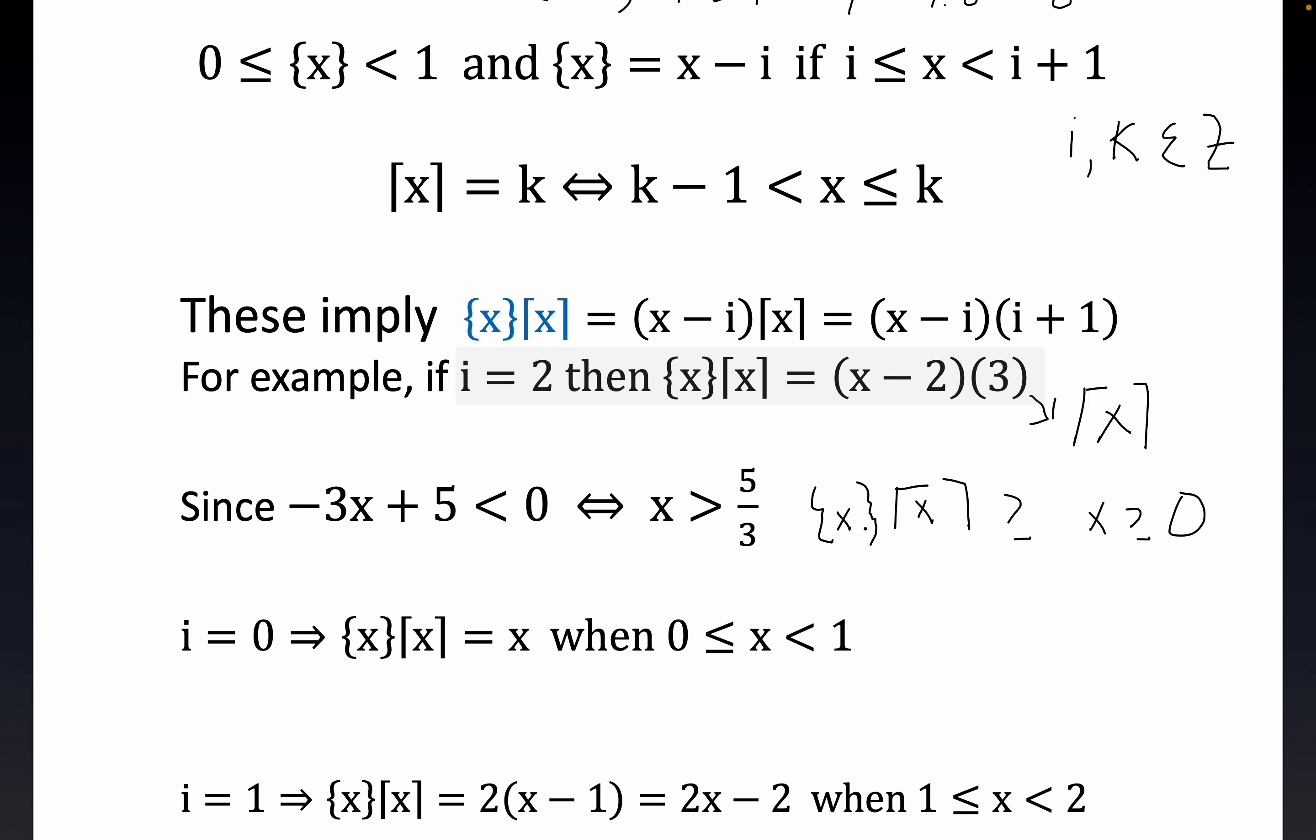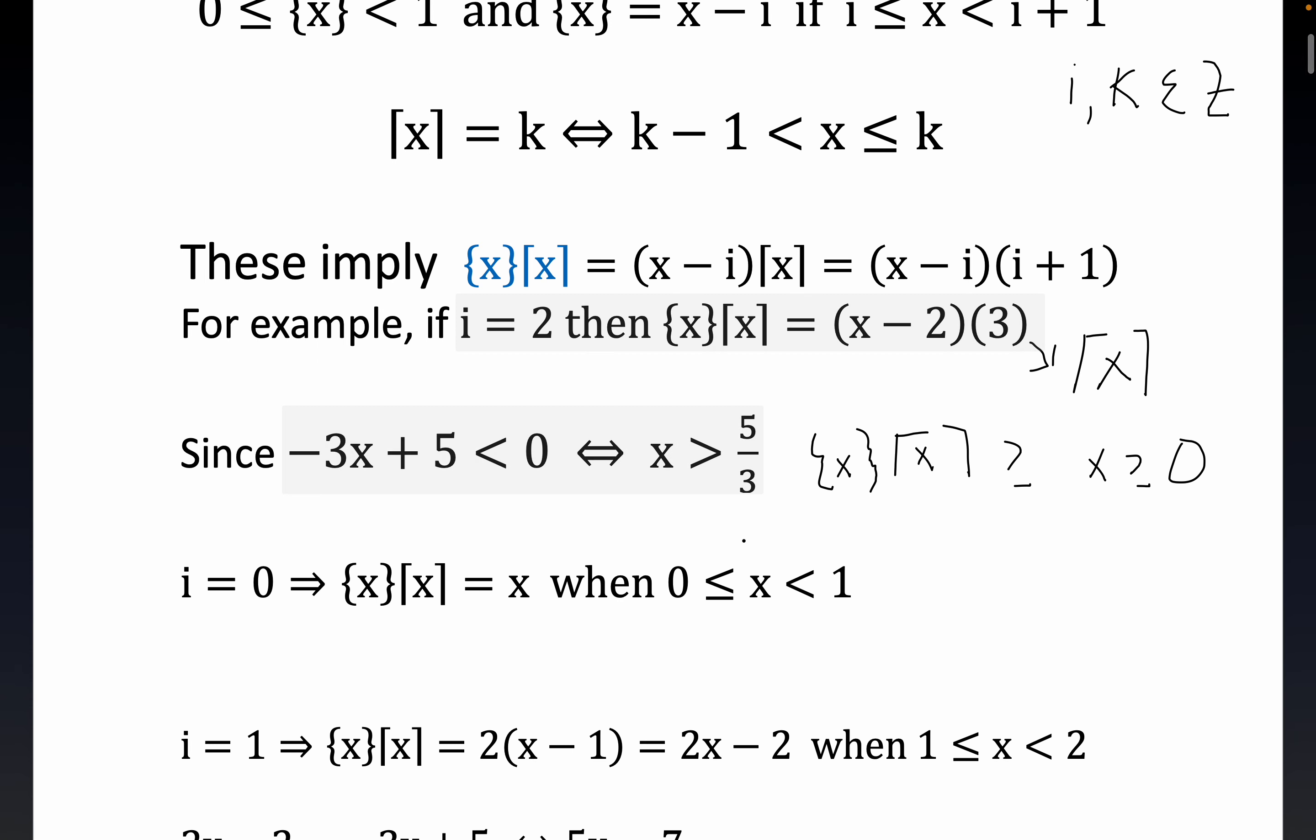The fractional part times the ceiling has to be non-negative. And that's crystal clear without saying much more. But notice that our linear expression becomes negative once x is greater than 5 thirds. So that means we only need to check these two cases here. There's just two cases.